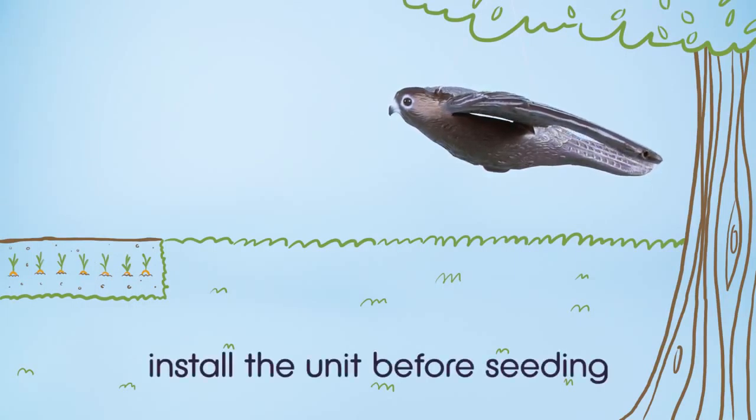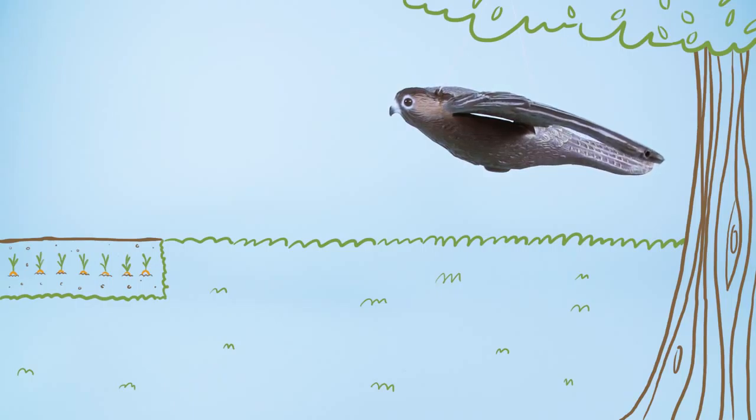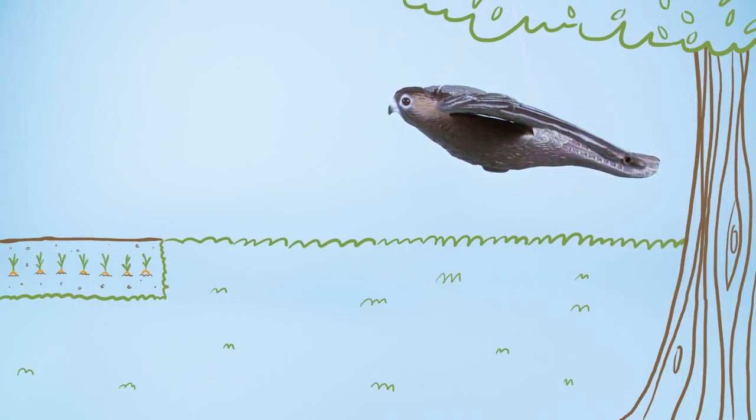For best results, install the Flying Falcon at planting or sowing time. It will help deter birds and prevent plant damage when newly seeded areas are at their most vulnerable.